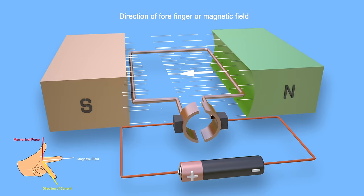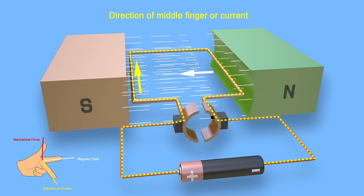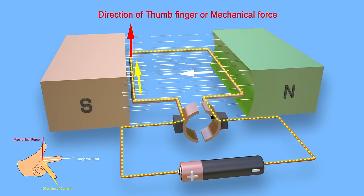If the forefinger is aligned along the direction of magnetic field from north pole to south pole, and the second finger is aligned along the direction of current in the left side conductor, then the thumb indicates the direction of mechanical force.